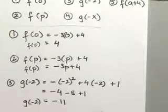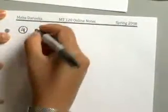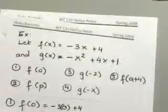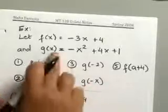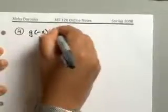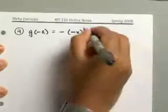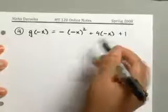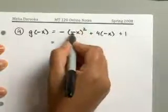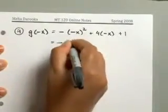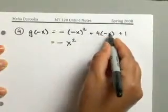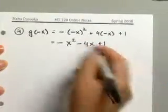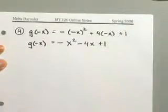For g of negative x: your g function is negative x squared plus 4x plus 1, and you replace every x with negative x. You get negative of negative x squared plus 4 times negative x plus 1. Negative x squared is positive x squared, and the outside negative makes it negative x squared. Then 4 times negative x is negative 4x plus 1. You can't simplify further, so g of negative x equals negative x squared minus 4x plus 1.